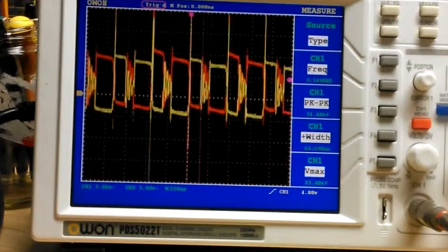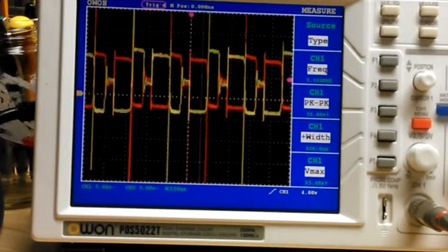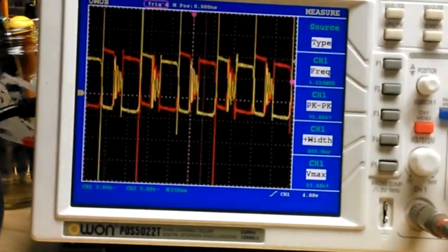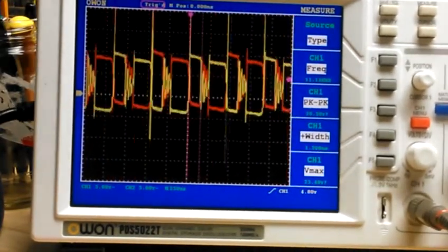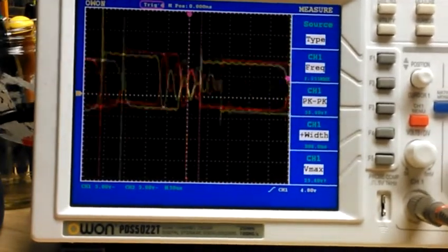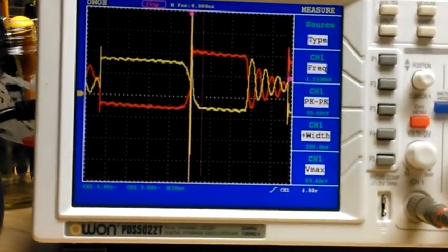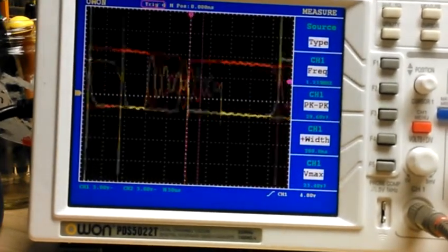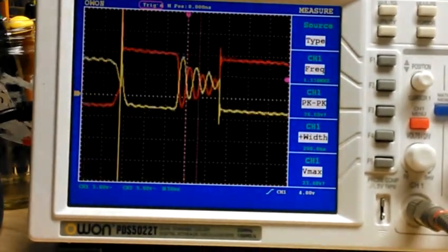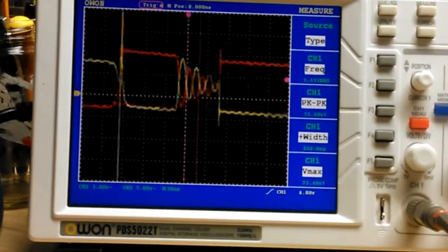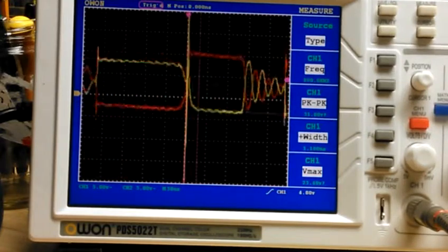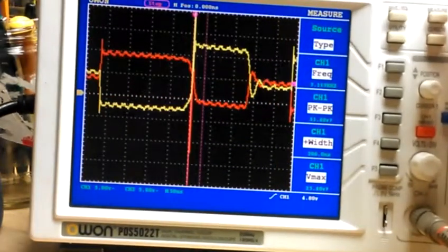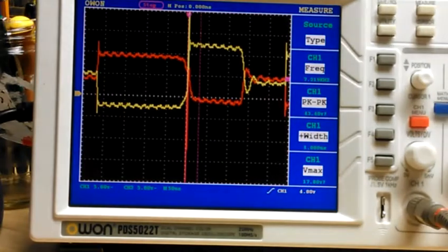So you can see I can dampen that ringing a little bit. I don't know if I should have a snubber on here or not. You can see the oscillations on there. Let me put the resistor on and then I'll freeze it. As you can see, it's a lot less.